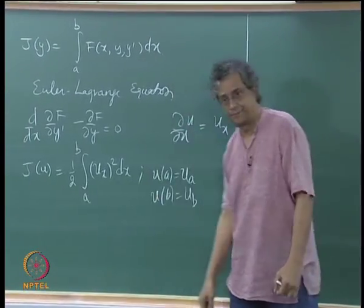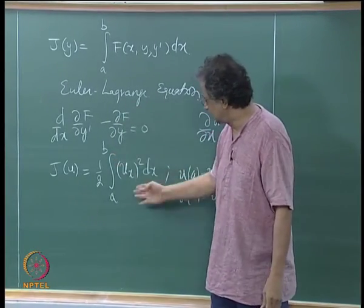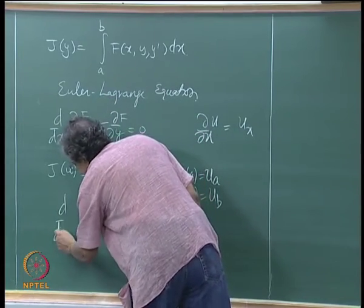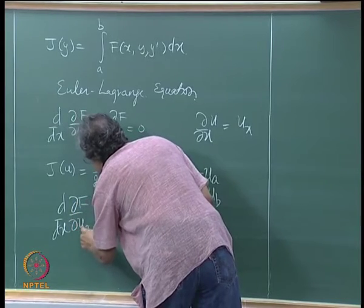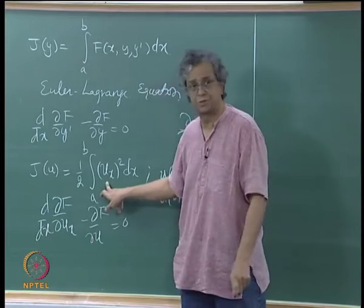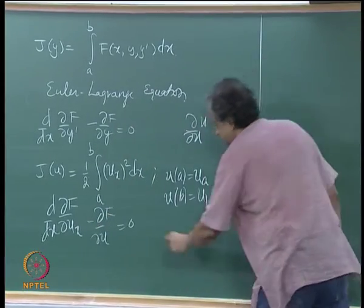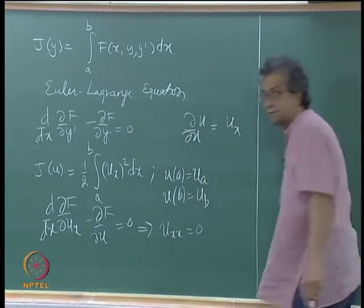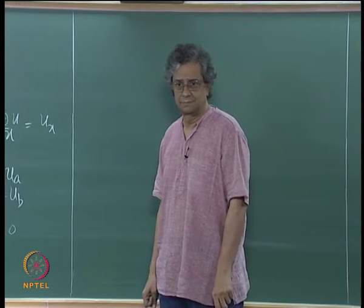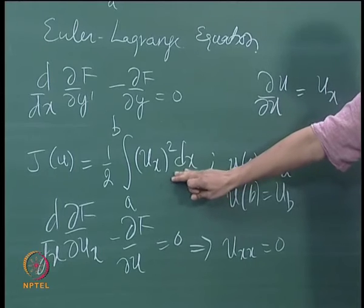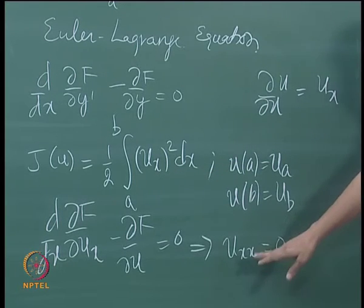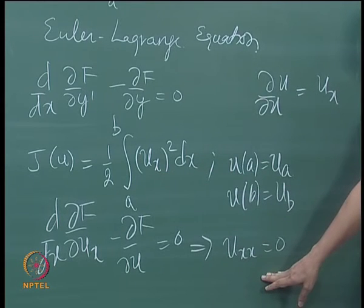The Euler-Lagrange equation gives us ∂f/∂u = 0 because f is not a function of u directly, which gives us the 1D Laplace's equation. So this problem — finding the extremum for this functional — is the same as solving this differential equation.